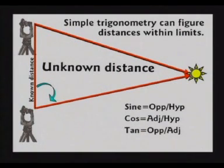The distance to this unknown point, or this unknown distance to this point, with simple sine, cosine, tangent. The problem is Earth is only 8,000 miles in diameter, which is basically nothing compared to star distance. So to find the distance to a star, you have to get your observers further apart to make a triangle that's a decent angle.